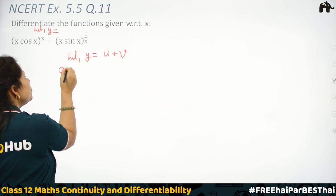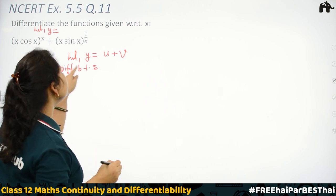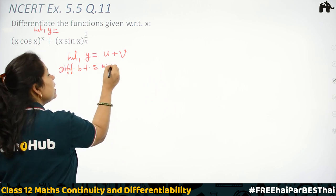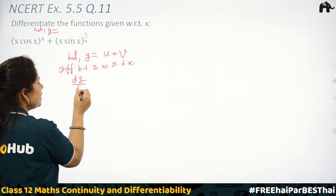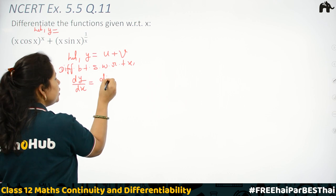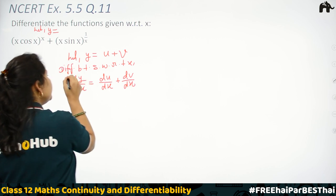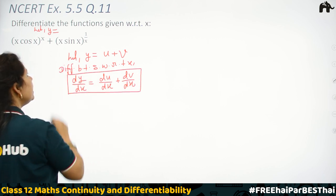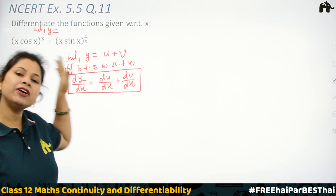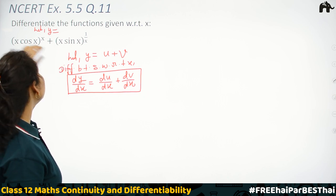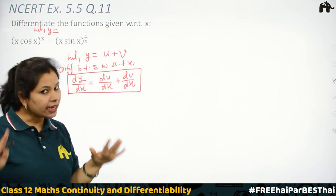So now we have written y = u + v. Differentiating both sides with respect to x, we get dy/dx = du/dx + dv/dx. We have to calculate du/dx and dv/dx separately. Now what is our u? The first term — x·cos(x) to the power x. And v is the second term. So first we have to solve u.